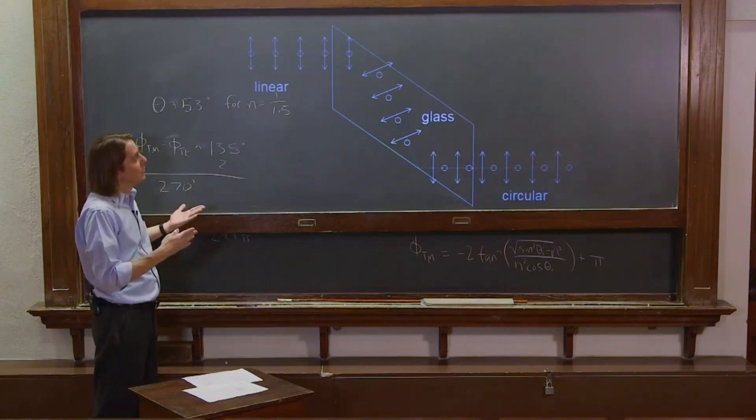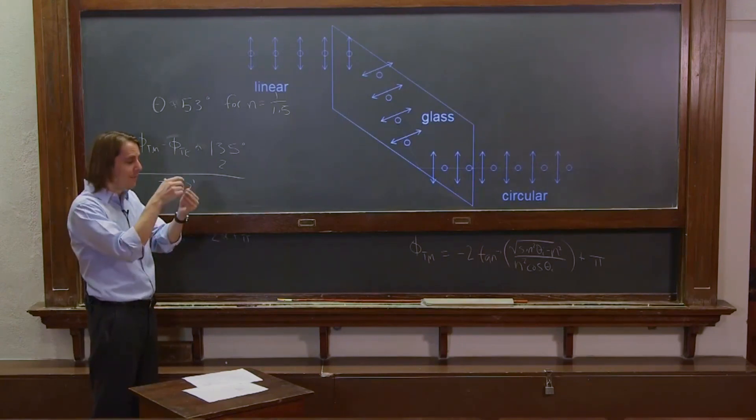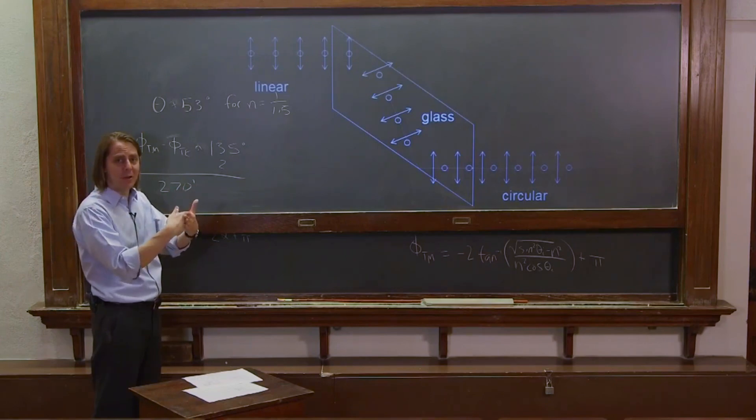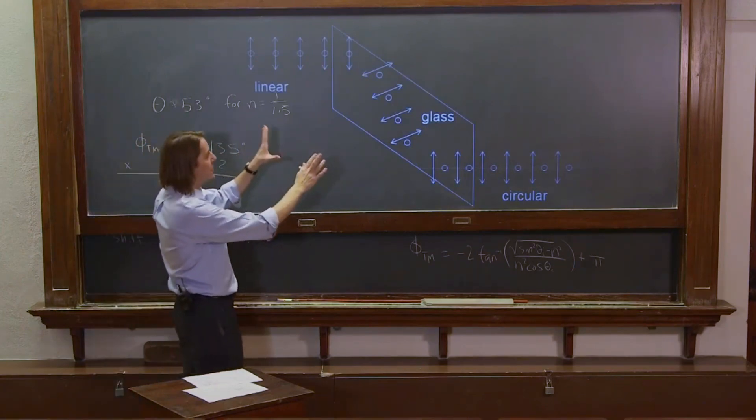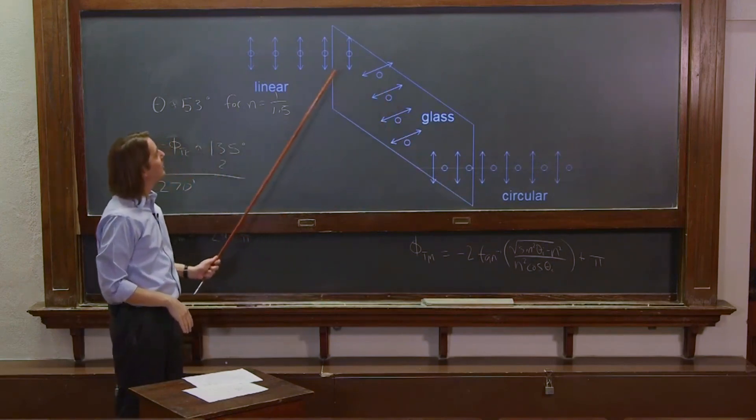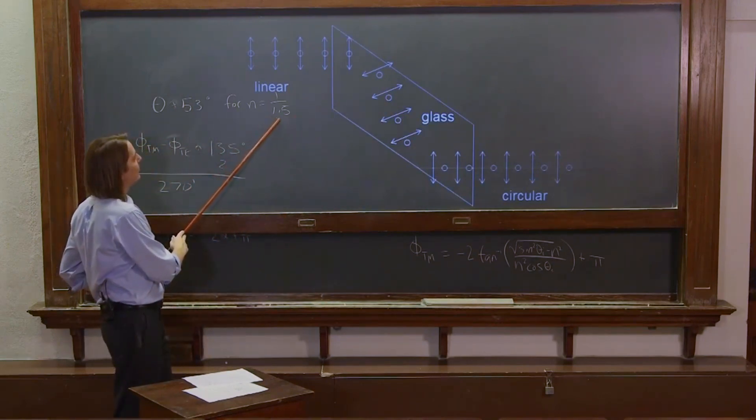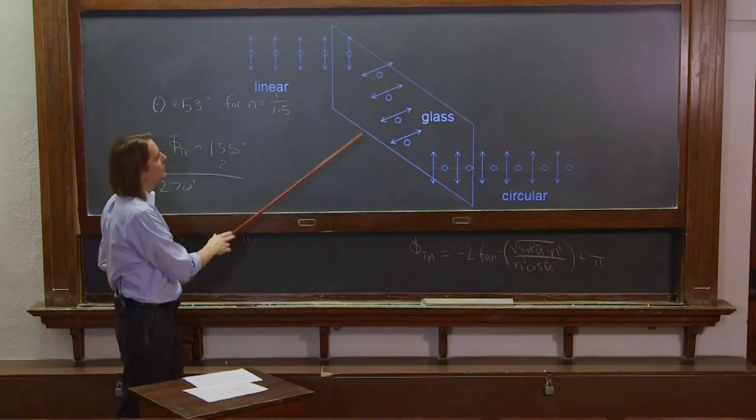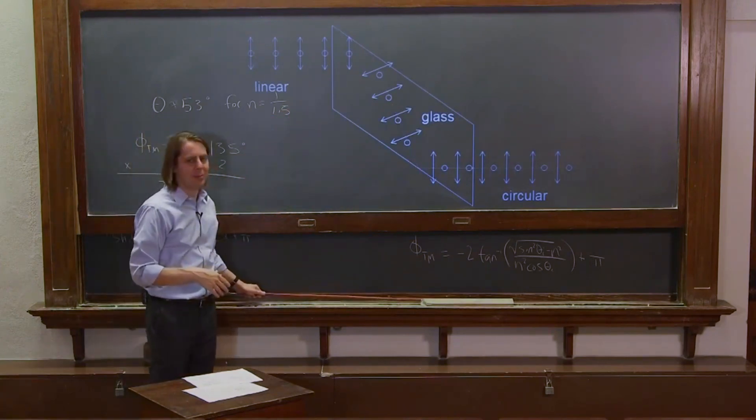The only disadvantage of these things is that they're big, right? So this is not a little film material that does this inherently through anisotropy. This is a fairly large piece of glass. But it can do it and not too sensitive to wavelength, really. It really just depends on this number. As this changes with wavelength, the properties will change. But it's one useful way to manipulate polarization.